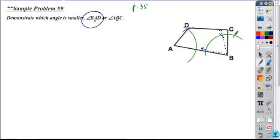If my arc had fallen outside here, then angle B would be smaller. And if it fell right on that side, then they'd be the exact same length.